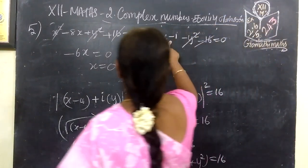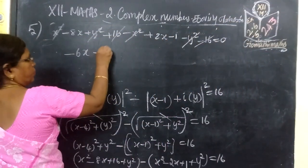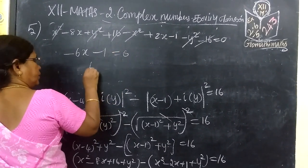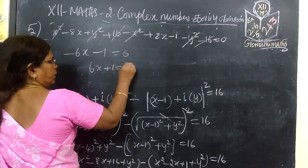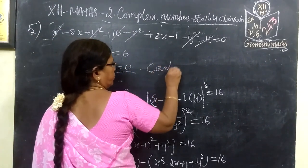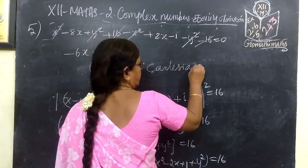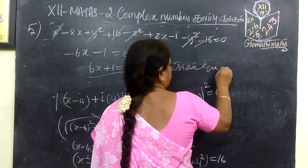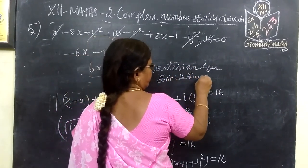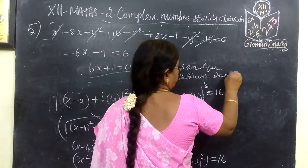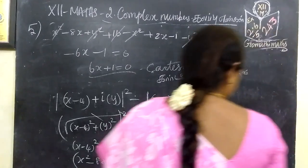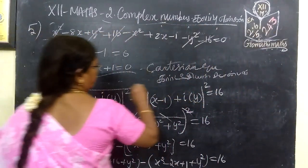So we get minus 6x plus 1 equals 0. This is the Cartesian equation — the required Cartesian equation for this sub-question. Answer confirmed correct.